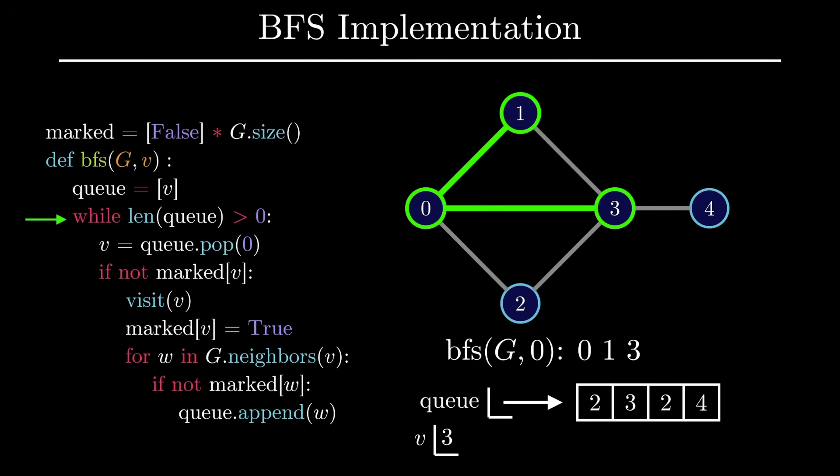We then remove the next vertex off the queue, which happens to be vertex 2. Vertex 2 hasn't been visited, so we will visit the vertex and mark it, making it the fourth vertex in our BFS order. We iterate through all neighbors, but we don't add any of them to the queue since all neighbors have been visited.